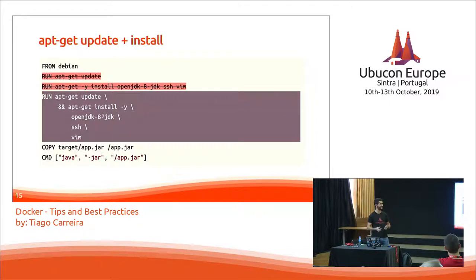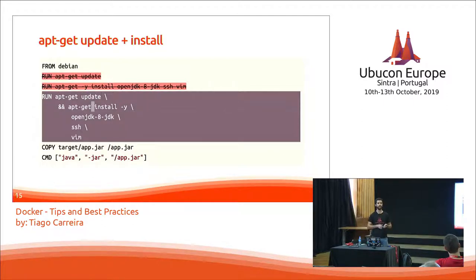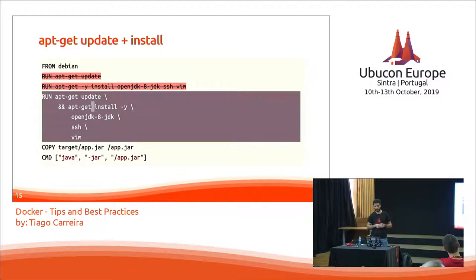A pro tip: keep commands structured across different lines — don't write a giant one-liner that is confusing. Another pro tip: keep the packages in apt-get install on separate lines and alphabetically ordered, because it's easier to maintain in Git.